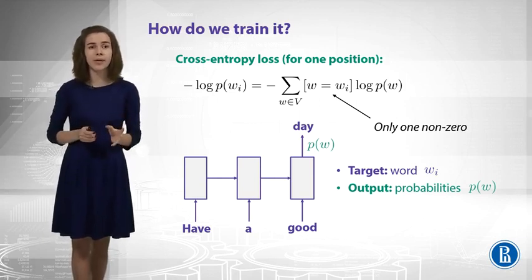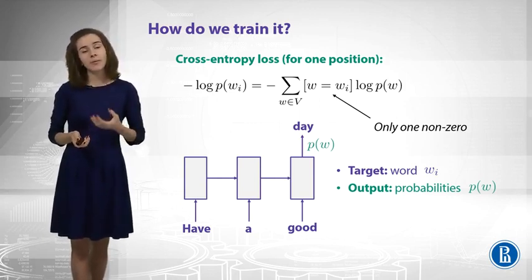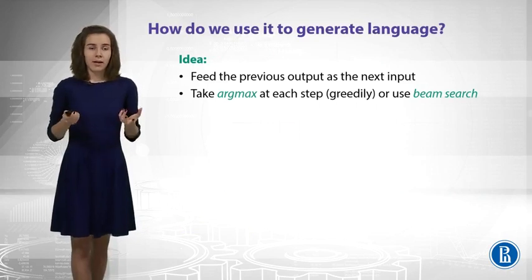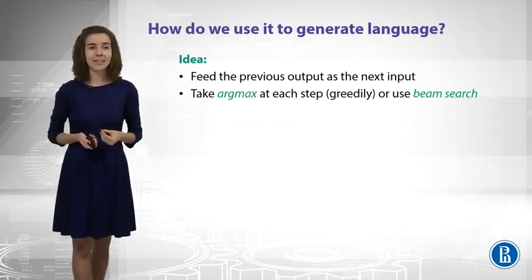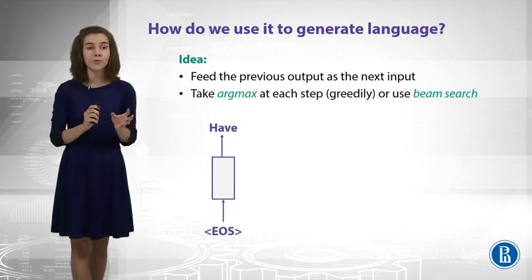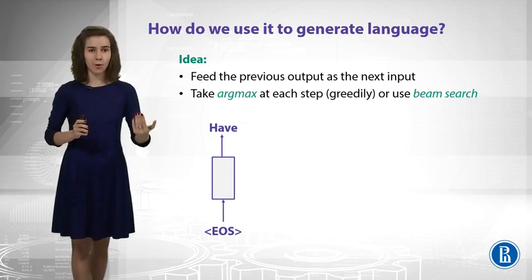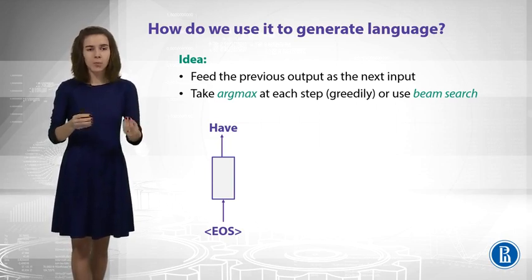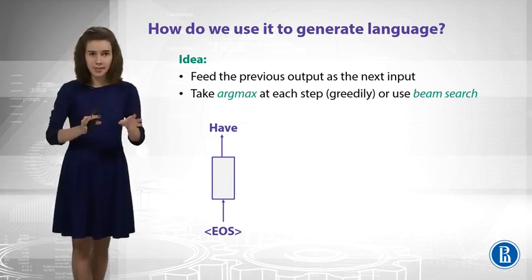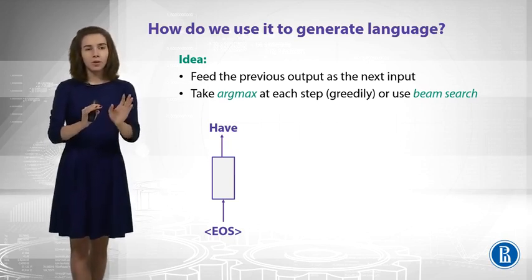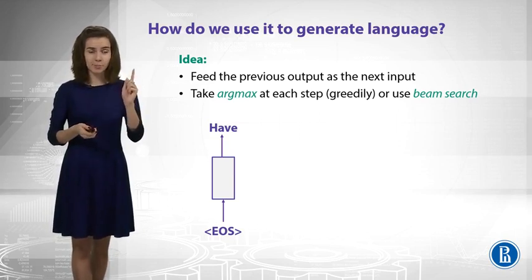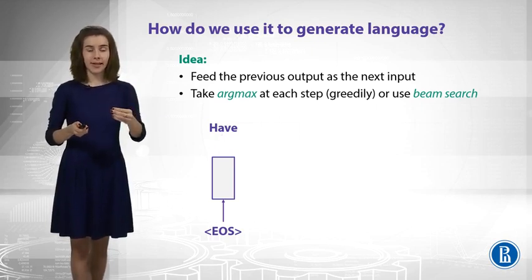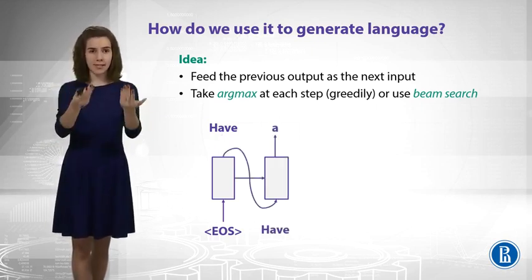So we have some understanding of how we can train our model. Now, how can we generate text? How can we use our model once it's trained? The idea is to start with a fake token — an end-of-sentence token — and try to predict some words. We get our probability distribution, and to get one word out of it, we can just take the argmax. This is the easiest way. Then we feed those output words as input for the next state and produce the next word, continuing like this to produce next and next words and get some output sequence.